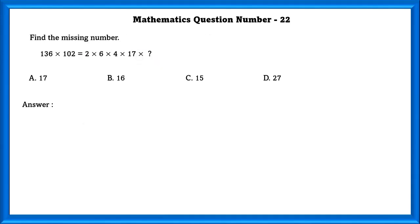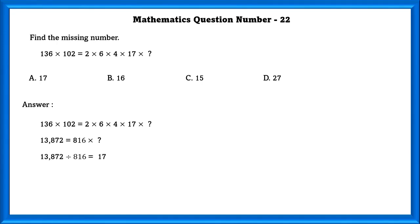Mathematics question number 22: Find the missing number. 136 into 102 is equal to 2 into 6 into 4 into 17 into dash. Simplifying this we get 13,872, which is equal to 816 into dash. 816 into 17 is equal to 13,872.